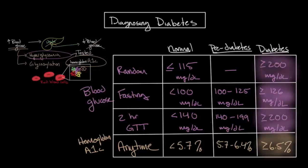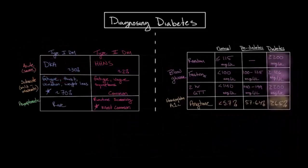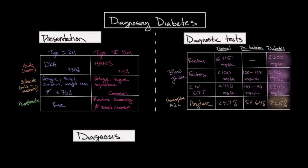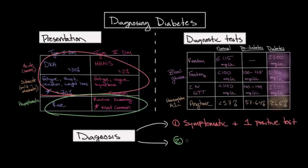Now that we have a better understanding of the clinical presentation of diabetes mellitus and the laboratory tests, let's bring these two components together to discuss how the diagnosis is made. Neither the presentation nor the diagnostic test alone is enough to diagnose diabetes — the diagnosis requires a combination of the two. There are two ways diabetes mellitus can be diagnosed based on presentation. If an individual has symptoms of diabetes, whether acute or subacute, then only one positive test — either the blood glucose or the hemoglobin A1C — is necessary for the diagnosis. However, if the individual is asymptomatic, then a diagnosis requires two positive tests separated by at least one week.